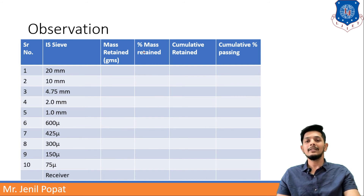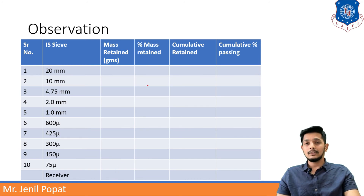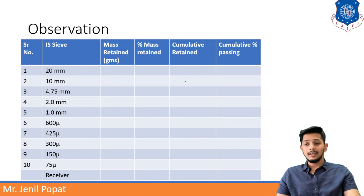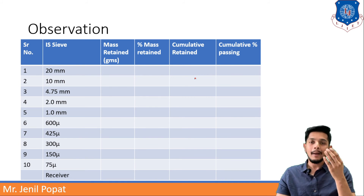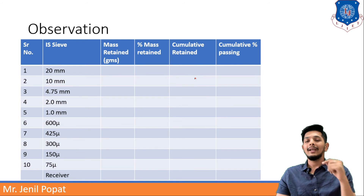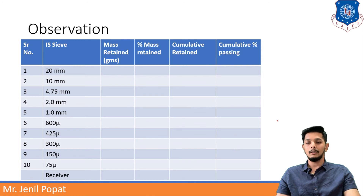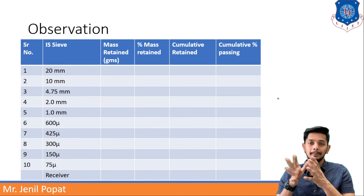After that, you will fill the second column which is percentage mass retained. If it is 100 grams and total was 1000 grams, it is 10% of that, so you will write down 10% here. For cumulative retained, in the second row the 10 mm sieve will retain two sets of data: it will retain soils retaining on 20 mm and those passing from 20 mm both. You will write cumulative figures here and percentage cumulative figures in this column. This is how you will prepare the observation table.